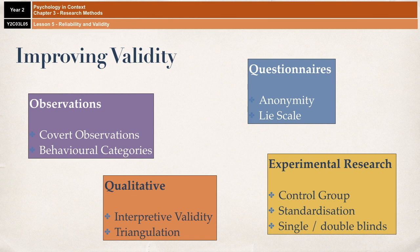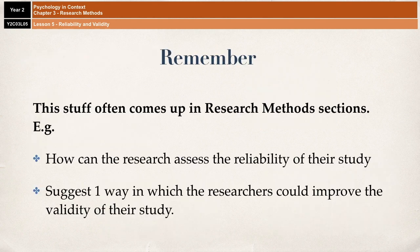I hope that's all made sense. We're now coming towards the end of the video and there's been a lot of stuff covered. Go back and have another look at certain bits if you think you missed something. Remember, this stuff often comes up in research methods sections in papers — for example: how can the researchers assess the reliability of their study? Suggest one way the researchers could improve the validity. Explain what is meant by validity in relation to the above study. Make sure you have the information on reliability and validity locked down tight, as they are very popular questions. I hope this has been useful — thank you very much for listening.